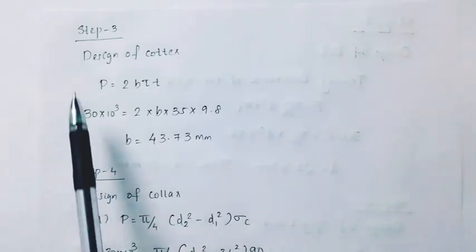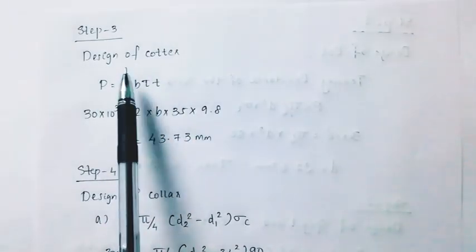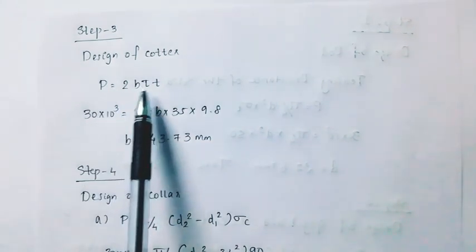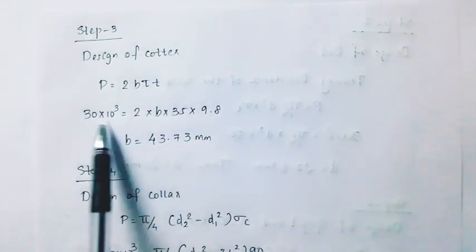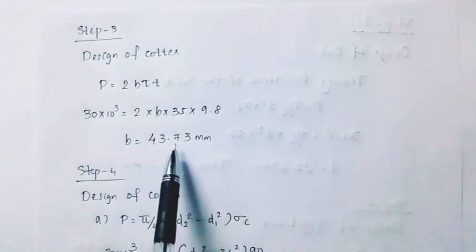Step 3: Design of quarter. P equals 2 times b into t. Substituting gives b equal to 43.73 mm.